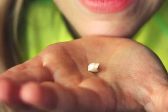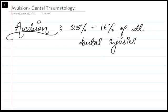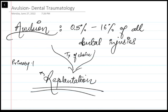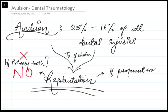Avulsion of permanent teeth is one of the most common dental injuries, seen in 0.5 to 16 percent of all dental injuries. Numerous studies have shown how various injuries can be serious in nature and what could be the prognosis. The most common question is what is the treatment option. The treatment of choice for avulsion is always going to be re-implantation, and it depends on whether it's a primary tooth or a permanent tooth.